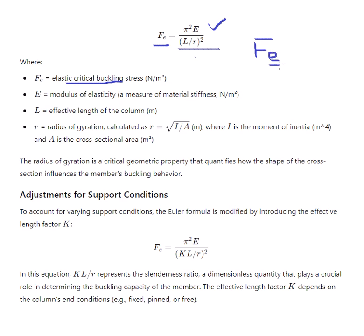Fe denotes elastic critical buckling stress. E is the modulus of elasticity — a dimensionless measure of material stiffness. L is the effective length of the column, and R is the radius of gyration, calculated as the square root of I over A, where I is the moment of inertia and A is the cross-sectional area. Radius of gyration is a critical geometric property that quantifies how the shape of the cross-section influences the member's buckling behavior.